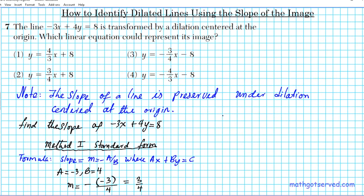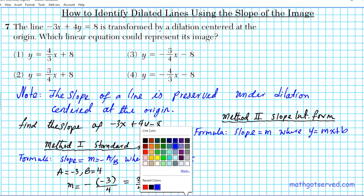Let's use the second method to find the slope. Method two is the slope intercept form. The formula is: the slope is just M where you have the form y equals mx plus b. So if you can get the line into slope intercept form, it's easy to determine the slope.